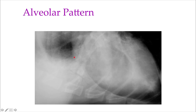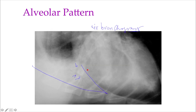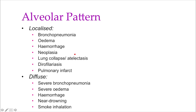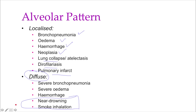In alveolar pattern, the lung is white and we do not see any vessels, as in this consolidated cranioventral lung lobe. In early alveolar disease we can see air in the bronchi, creating air bronchograms. If left untreated, the bronchi fill up and you just have a white opaque lobe. The differential for alveolar pattern is similar to interstitial: pneumonia, edema, hemorrhage, neoplasia — and we can also include lung collapse, dirophilaria, or pulmonary infarct. When diffuse, also consider near drowning or smoke inhalation.